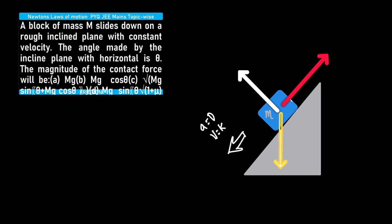The angle made by the inclined plane with the horizontal is theta. We consider this to be the horizontal. The magnitude of the contact force is what we need to find. Since the body is sliding downwards,